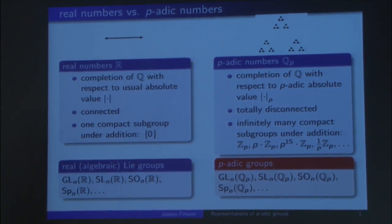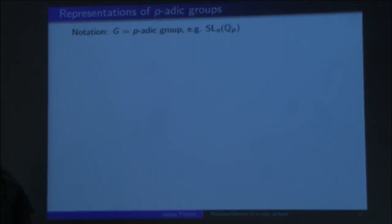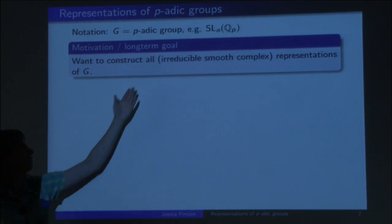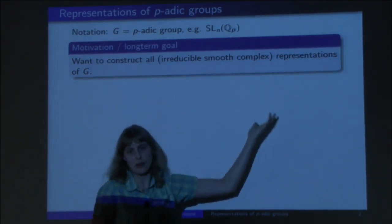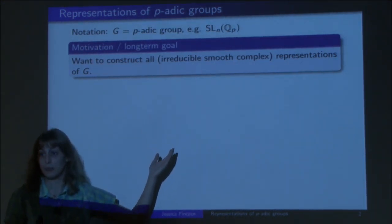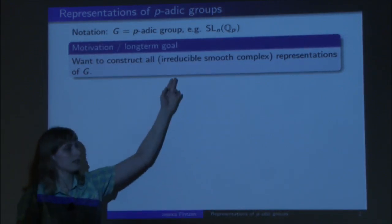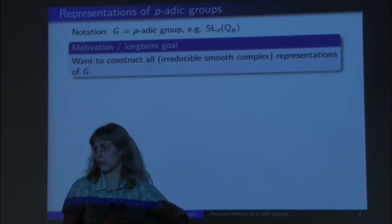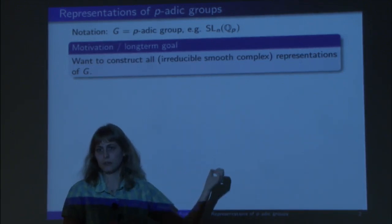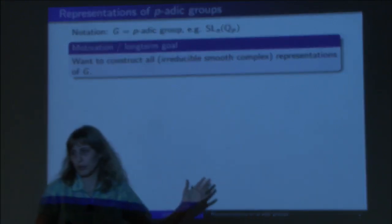So these are p-adic groups. For the rest of the talk, G is our p-adic group. What we are interested in is studying the representations — we want to construct all irreducible, smooth, complex representations. These are maps from G into the group of automorphisms of a complex vector space, which is most of the time infinite dimensional. Irreducible means no non-trivial subrepresentation — we just look at the building blocks. Smooth means the stabilizer of every vector is open, so that we get a category that's interesting to study.